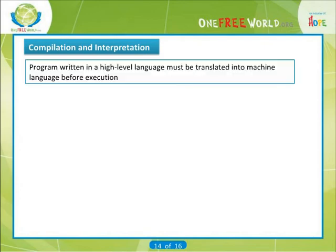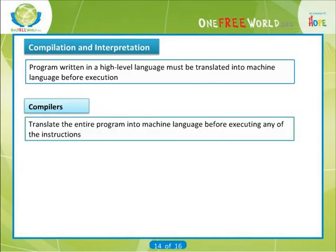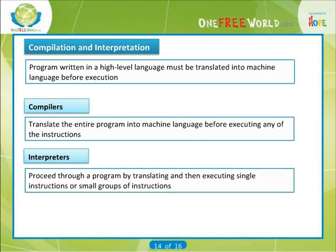Let's move on to compilation and interpretation. A program that is written in a high-level language must, however, be translated into machine language before it can be executed. This is known as compilation or interpretation, depending on how it is carried out. Compilers translate the entire program into machine language before executing any of the instructions. Interpreters, on the other hand, proceed through a program by translating and then executing single instructions or small groups of instructions. In either case, the translation is carried out automatically within the computer. Inexperienced programmers may not even be aware that this process is taking place, since they typically see only their original high-level program, the input data, and the calculated results. Most implementations of C operate as compilers.